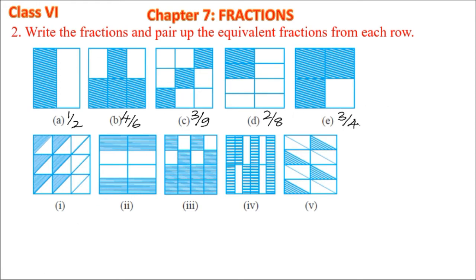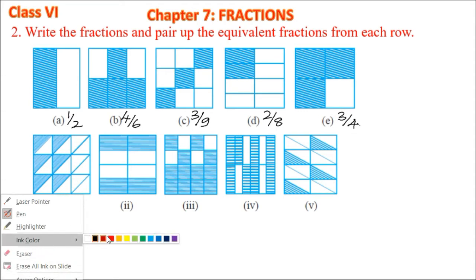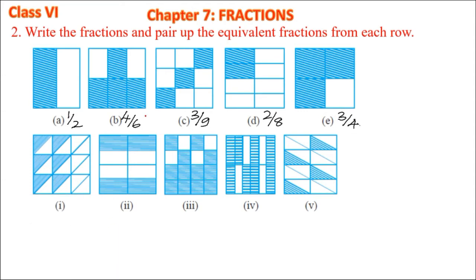Let's express row A fractions in simplest form. Dividing 4 by 6 by 2 gives 2 by 3. Dividing 3 by 9 by 3 gives 1 by 3. Dividing 2 by 8 by 2 gives 1 by 4. And 3 by 4 remains 3 by 4.